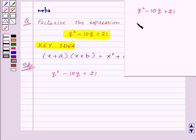So, here in the given expression, the coefficient of q is minus 10 and constant term is 21. Here, x is same as q. That means we need to find two numbers a and b such that a plus b is equal to minus 10 and a into b is equal to 21.